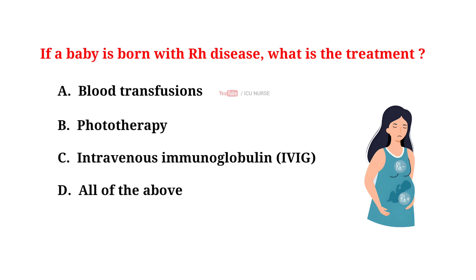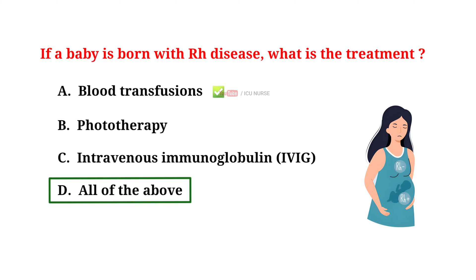If a baby is born with Rh disease, what is the treatment? A. Blood transfusions. B. Phototherapy. C. Intravenous immunoglobulin. D. All of the above. And the correct answer is D: all of the above. Blood transfusions, phototherapy, and intravenous immunoglobulins are all used in the treatment of Rh disease.